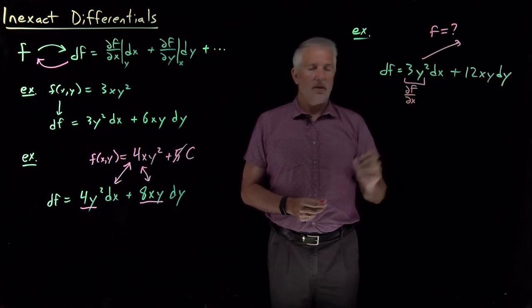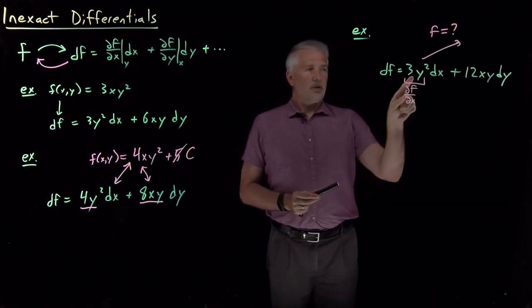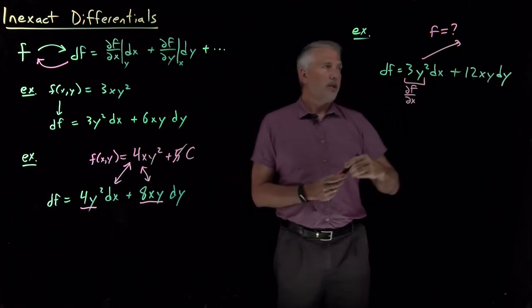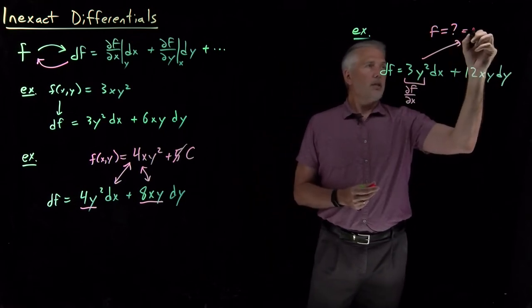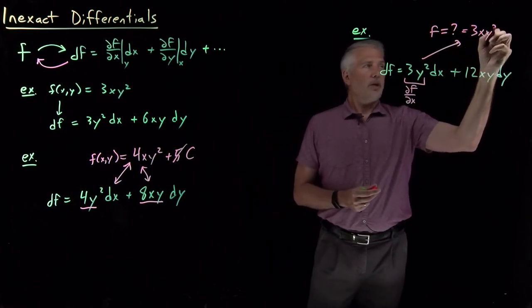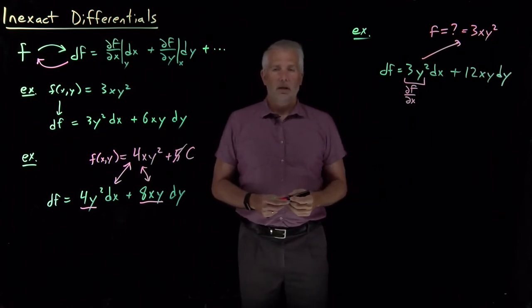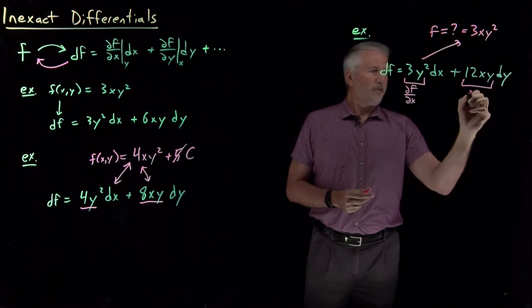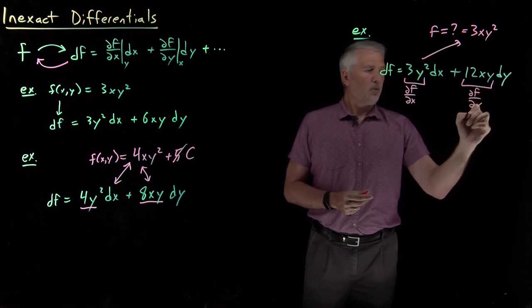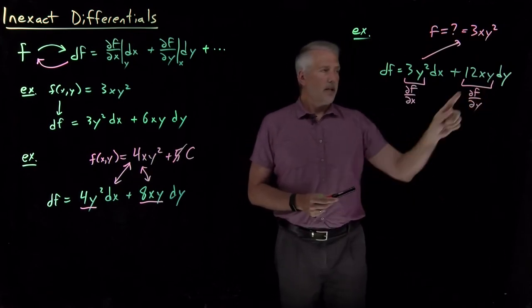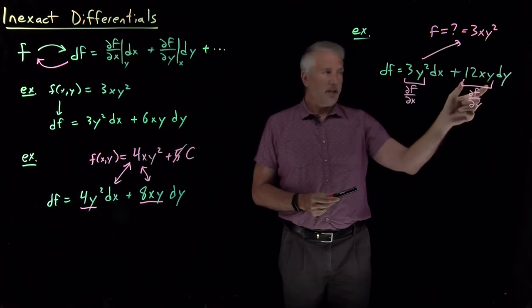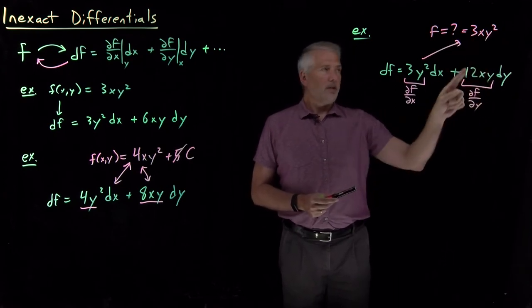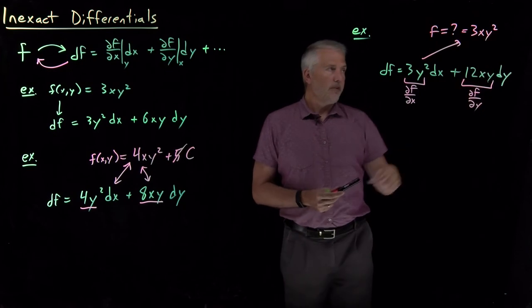What function has a partial x derivative that looks like 3y²? That must be 3xy². But when I do this one, if I ask what function has a partial y derivative, df/dy, that looks like 12xy, if I integrate 12xy to figure out what that f would be, the function whose y derivative looks like 12xy, that's going to be something different.